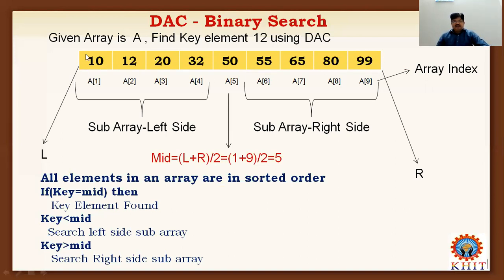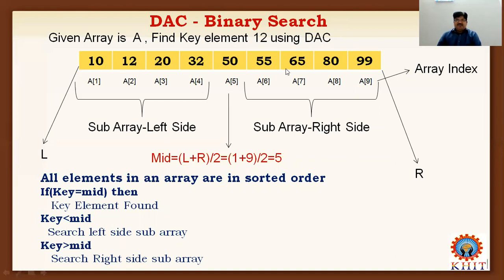The given problem is an array of size 10. Find element 12 using Divide and Conquer. We consider the given problem as a complex problem. When we apply Divide and Conquer technique, the complex array is divided into two sub-arrays — sub-array 1 and sub-array 2, or the left side and the right side — by using the concept of finding the mid element.